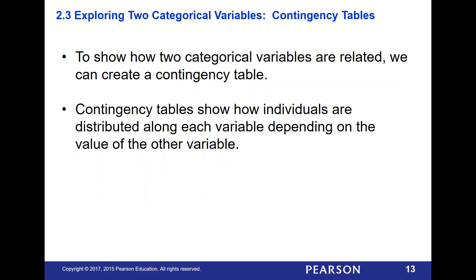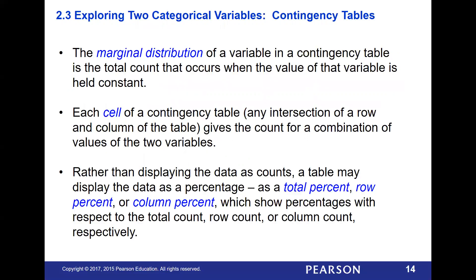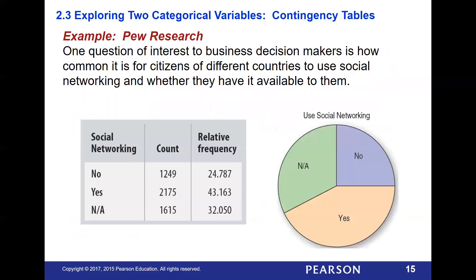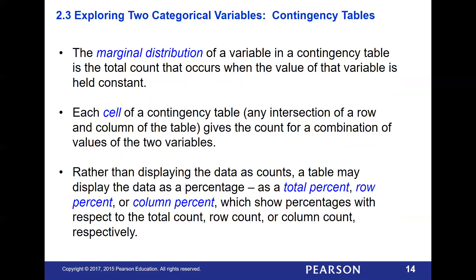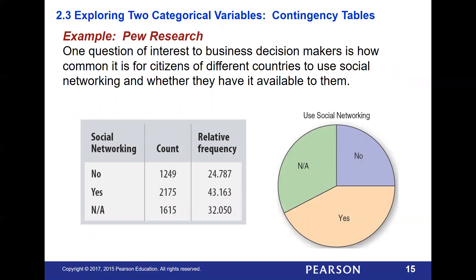We can also do what's called a contingency table to show how different data categories are distributed among each variable. We can break it out into subcategories and look at it in both counts and percentages. The marginal distribution of one of your variables is the total count that happens for that variable. Each one of the particular boxes in the contingency table is a cell, and each cell gives us the count for a combination of two variables — here, count and social networking.